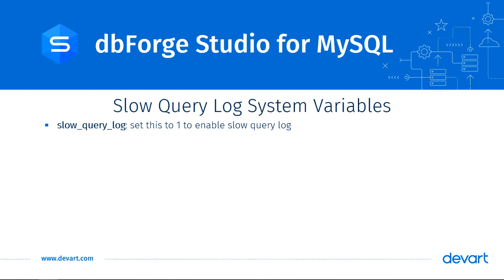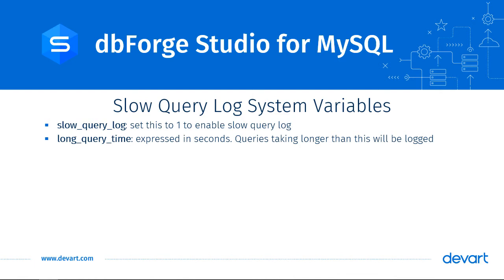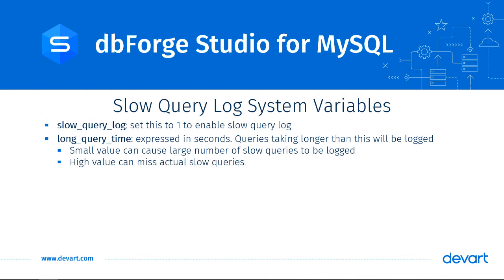The second variable is long_query_time, expressed in number of seconds. Any query running for more than this value will be logged. If you set it too small, you may end up with a large number of slow queries in the log. If you set it too high, you may miss the actual slow queries causing the bottleneck. The ideal value should be the time it takes for the longest running query to finish during normal operations — for example, set it to 3 if your longest query takes no more than 3 seconds.